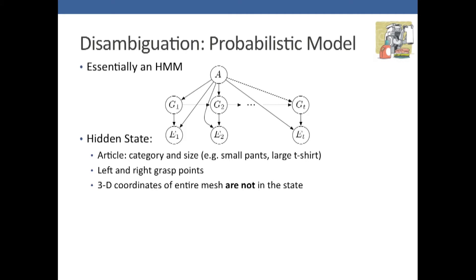The 3D coordinates of the mesh are not in the state. They're implied by the grasp points on the article and the locations of the grippers. This significantly reduces the size of the state space.